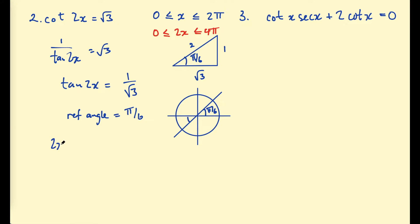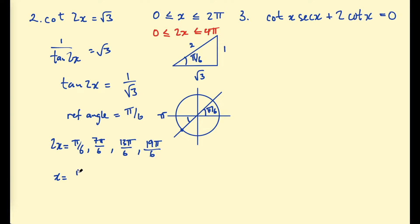For 2x, we get: π/6, then π plus π/6 which is 7π/6, then 2π plus π/6 which is 13π/6, and 3π plus π/6 which is 19π/6. Then we divide by 2 to get x. All values end up over 12, so our final solutions are π/12, 7π/12, 13π/12, and 19π/12.